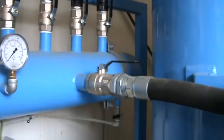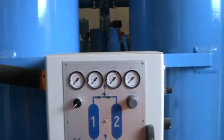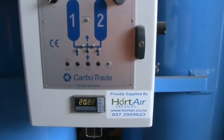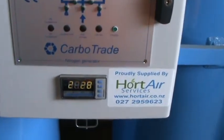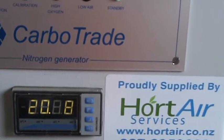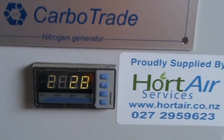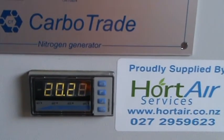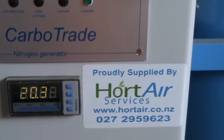On the control box for the nitrogen PSA side, each unit has its own individual built-in O2 sensor. At any one time we're able to determine and know what the output purity of nitrogen is for the machines.